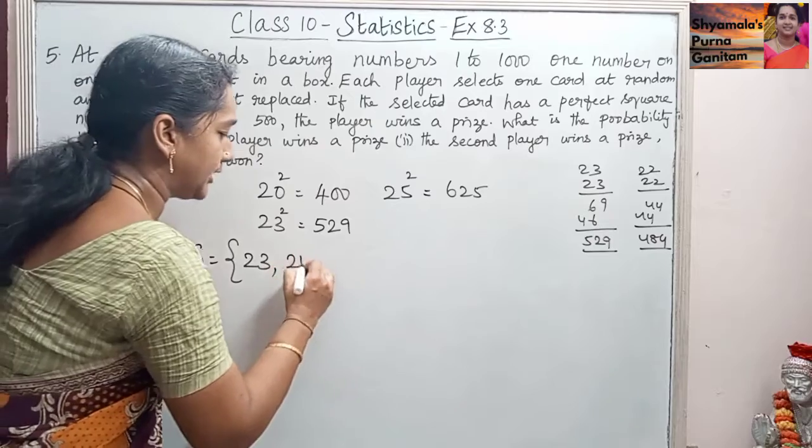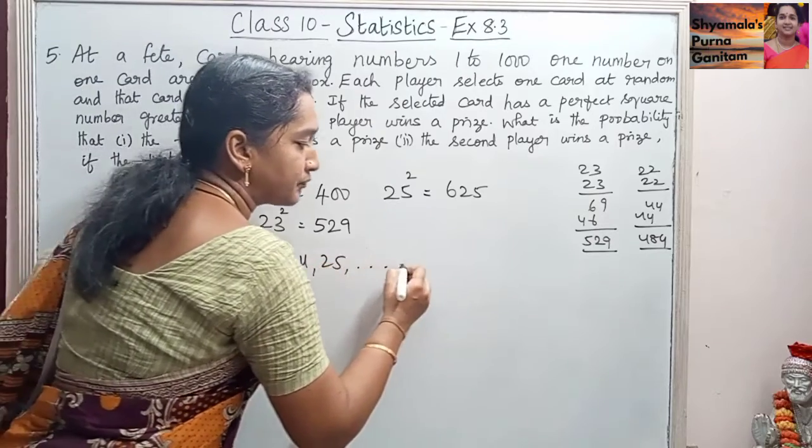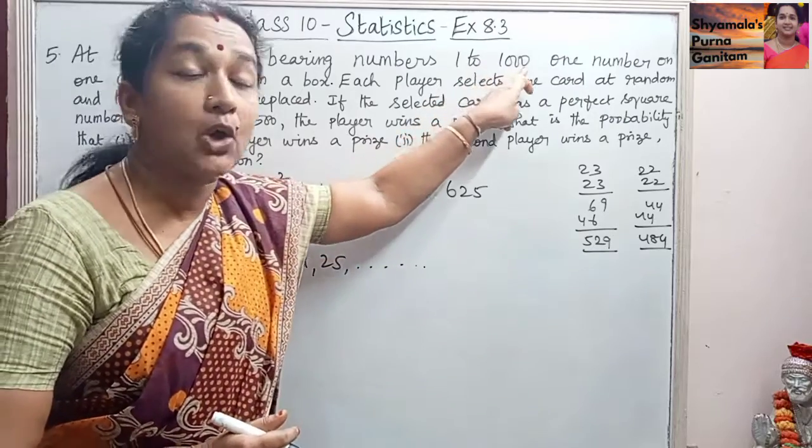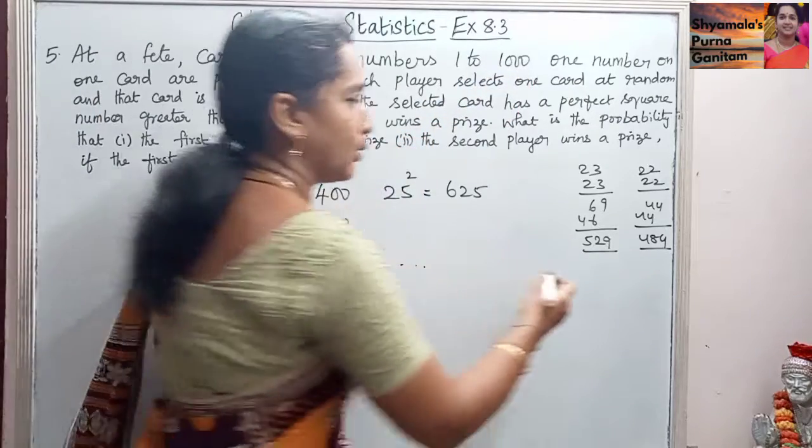So that square is greater than 500. So we will get 24, 25. If we take 30, finally we have to take, we are having cards till 1000 only.